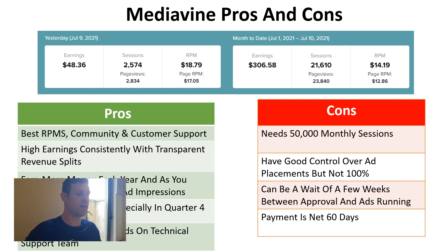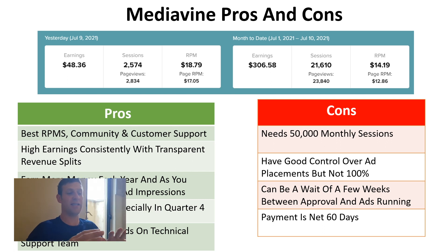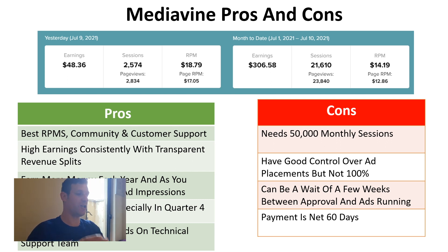The cons of Mediavine: it requires 50,000 monthly sessions, so there is a barrier to entry. You have good but not complete control over your ad placements. There can be a wait of a few weeks between site approval and your ads going live. Payment is net 60 days, so what you earn in June gets paid in September — quite a wait to get your hands on the money.